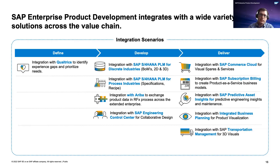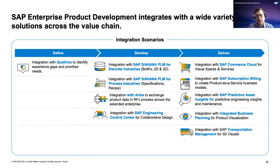We start with Qualtrics. Basically, when you do a survey on what's working well with your product and what can be improved, how do customers recognize your features — we can take those surveys from Qualtrics and capture them into requirements acquisition and requirements management.